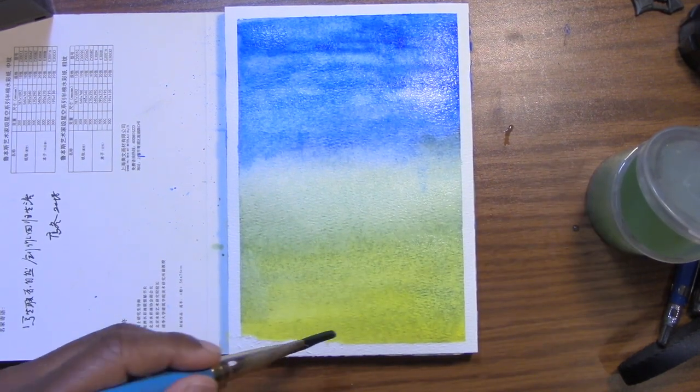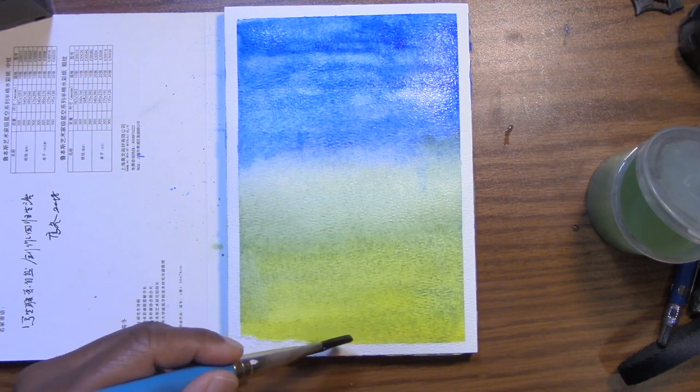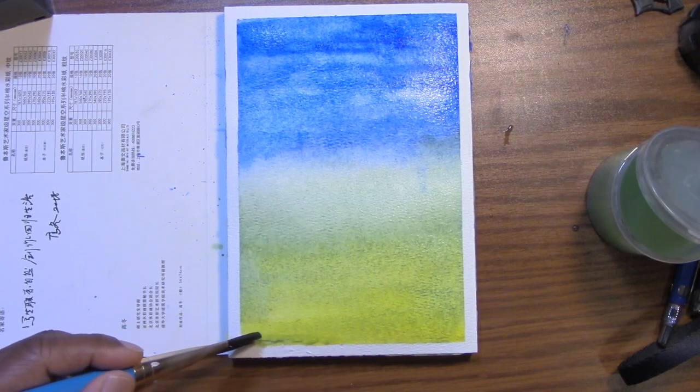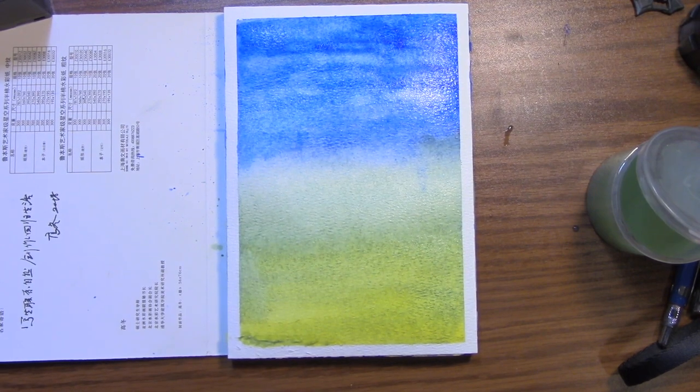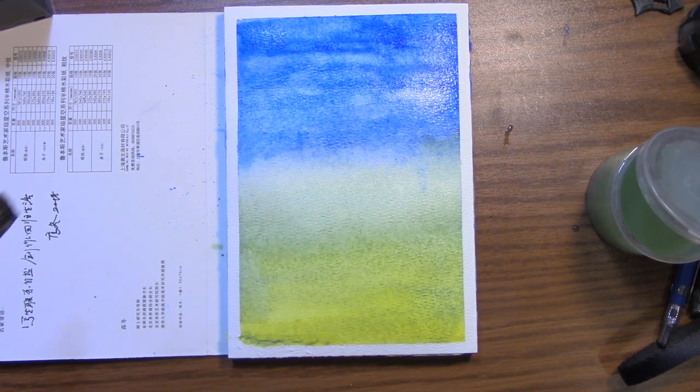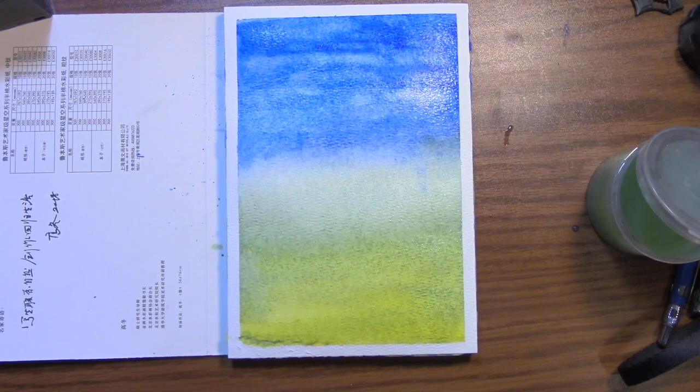I do have one more pad. I have a pad of Bayhung Academy hot press. So that's for more like pen and ink kind of work. Texture isn't so pronounced. And it's also, I believe that's also 300 GSM. So we'll check that out at some point as well.